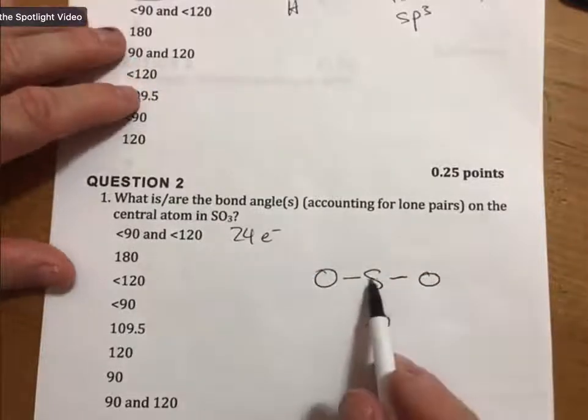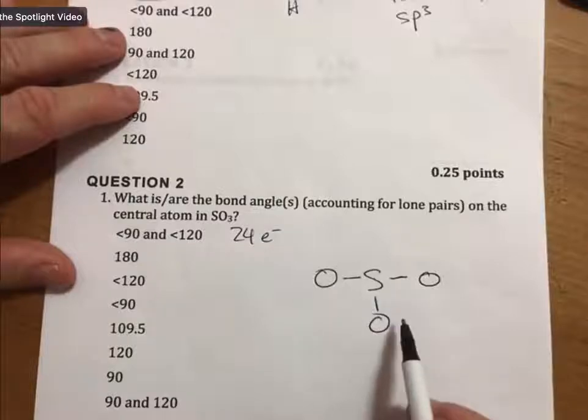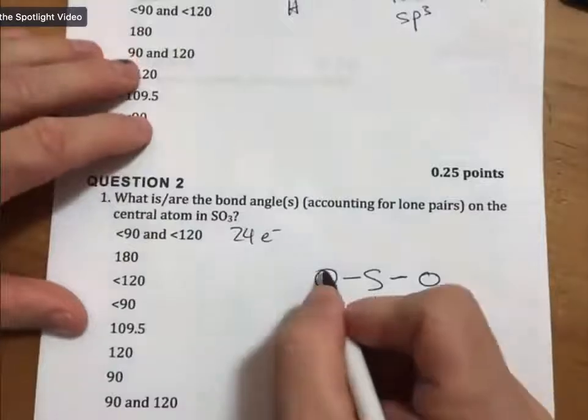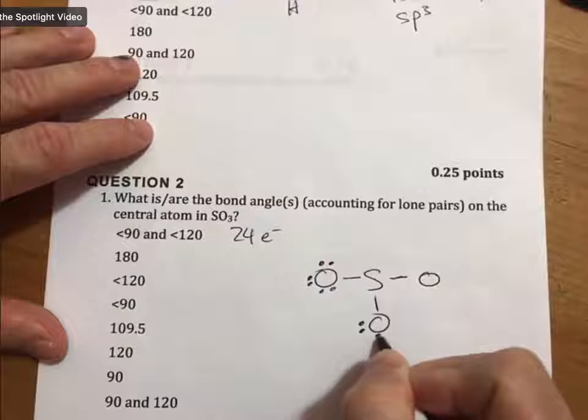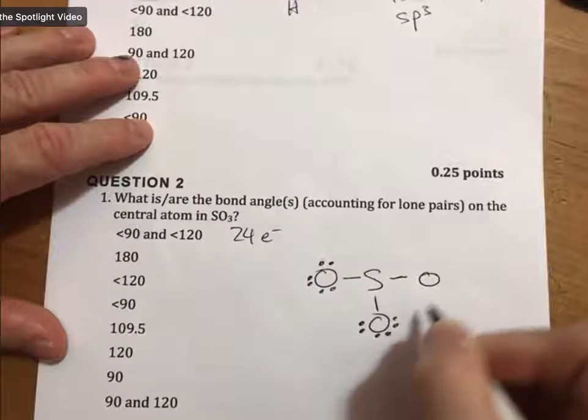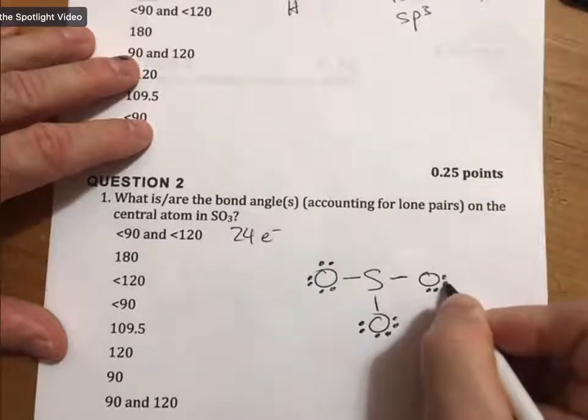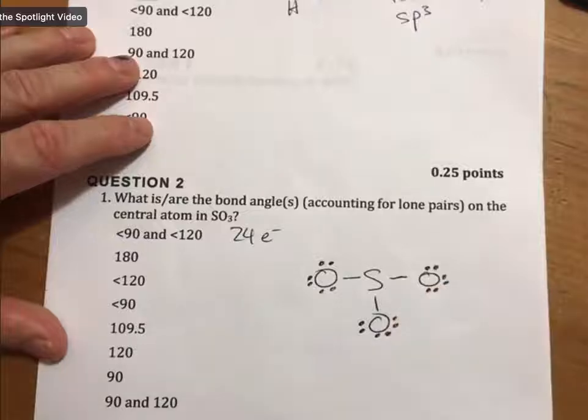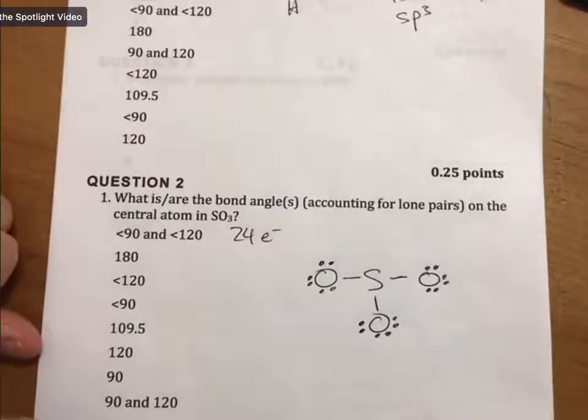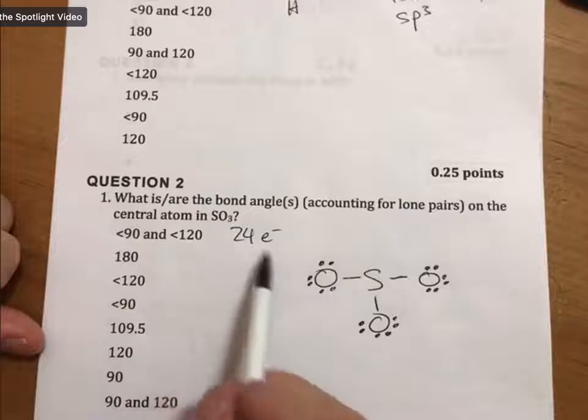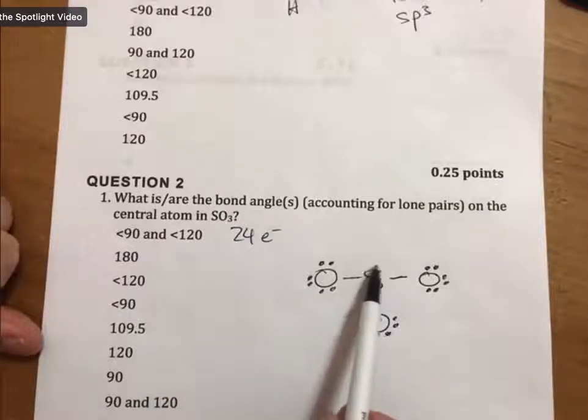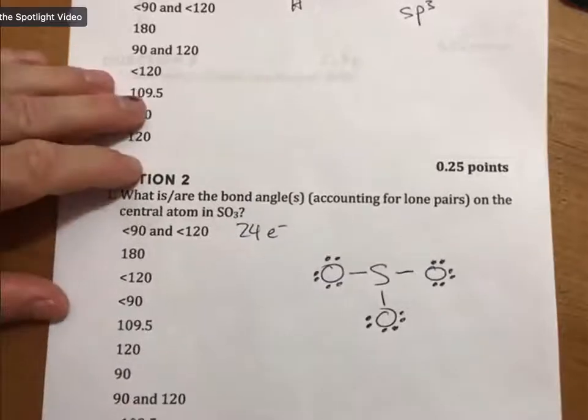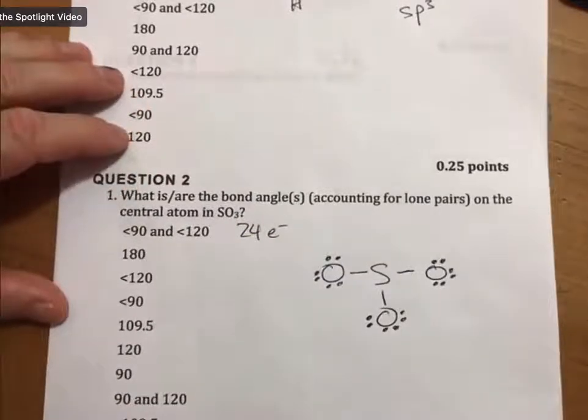We connect the sulfur to each of the oxygens, then we sprinkle our electrons around: 6, 8, 10, 12, 14, 16, 18, 20, 22, 24. And now we are out. It's so tempting to want to put more than 24 in there because we see that sulfur does not have an octet, but we cannot.